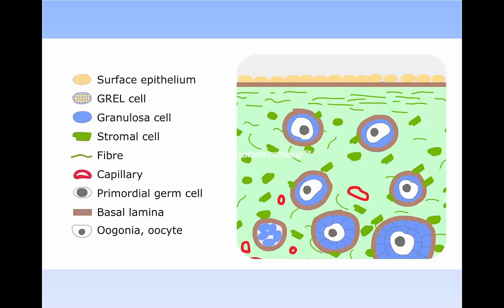So, to be able to conclude that GREL cells give rise to surface epithelium and to granulosa cells, there is one underlying assumption. Namely, that the stromal cells always remain on the stromal side of the basal lamina, and do not cross it. This is not an unreasonable assumption.